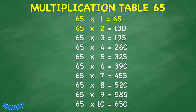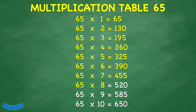65 times 2 equals 130. 65 times 3 equals 195. 65 times 4 equals 260. 65 times 5 equals 325. 65 times 6 equals 390. 65 times 7 equals 455. 65 times 8 equals 520. 65 times 9 equals 585. 65 times 10 equals 650.